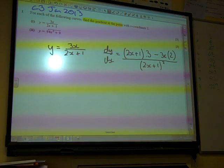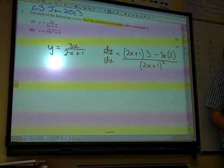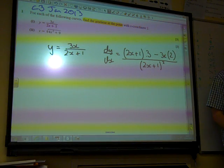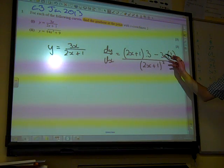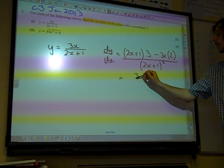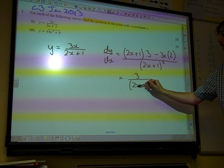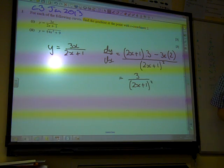Let's tidy up that top line. Oh, what happens to the x terms? It just goes, doesn't it? We've got 6x take away 6x. So, we're left with 3 over 2x plus 1 squared.